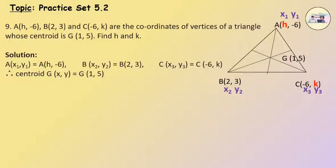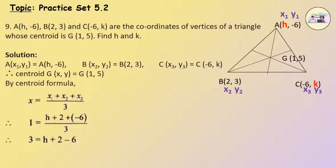By the centroid formula, x equals x1 plus x2 plus x3 upon 3. Therefore, 1 equals h plus 2 plus minus 6 upon 3. Therefore, 3 equals h plus 2 minus 6. Therefore, 3 equals h minus 4. Therefore, h equals 3 plus 4, so h equals 7.